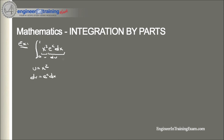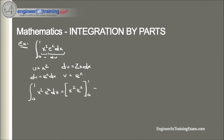Plugging into the integration by parts formula, the integral from 0 to 1 of x²eˣ dx equals x²eˣ evaluated from 0 to 1, minus the integral from 0 to 1 of 2x·eˣ dx. This new integral is not easily solvable, so we need to apply integration by parts again and add that result to our original equation.